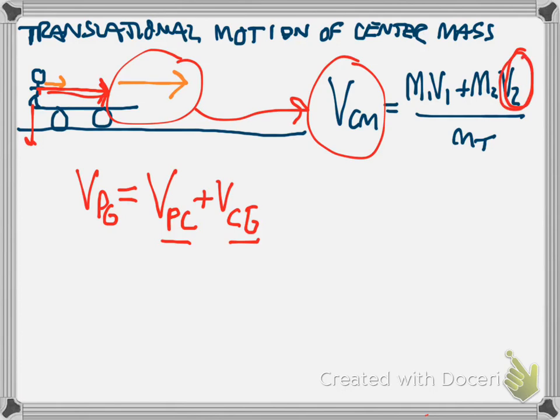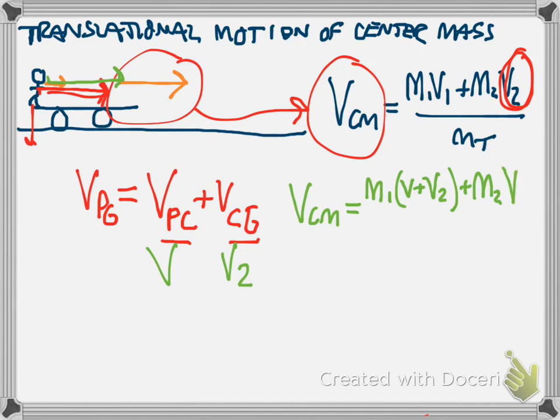So what this is going to end up looking like when we combine everything together is that we're going to get the velocity center of mass equals m1 times some velocity v that the person moves along the cart plus v2. That would be - this is v, this is v2 because we're calling the cart object 2 - plus mass 2 v2 over mass total.